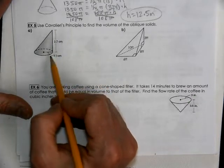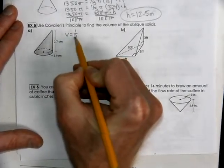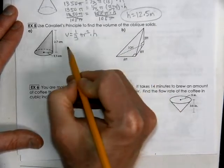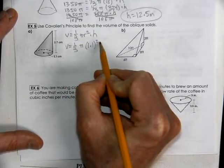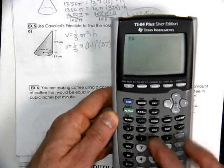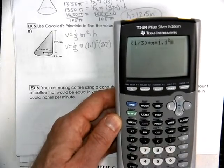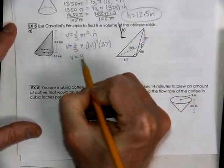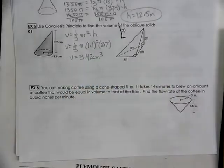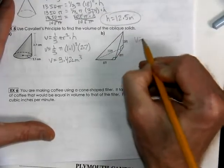Using Cavalieri's principle — if your cone shape is slanted, all you need is the height. The volume is still one-third times pi r squared times h. With r = 1.1 and h = 2.7, we calculate one-third times pi times 1.1 squared times 2.7, which equals approximately 3.42 cubic centimeters.